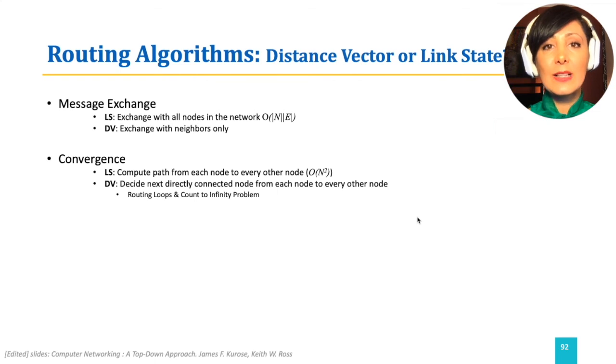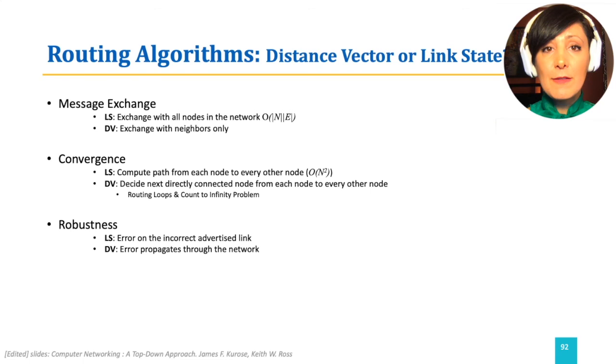In link state algorithms, error on the incorrect advertised link will affect the incorrect advertised link only. Due to limited information from neighbors in the distance vector algorithms, an error might propagate through the entire network and affect other nodes. The link state algorithm needs a lot of storage as it stores all links on paths within the network. Distance vector algorithms store limited information and therefore will not need a lot of storage.